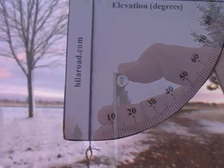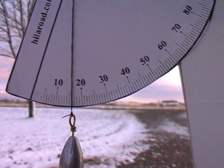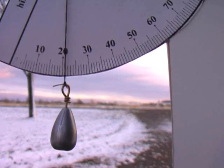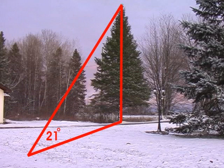The hanging weight maintains a true vertical reference line. The elevation to the top of this tree is 21 degrees. There are a number of interesting things you can do with data like this, including determining the height of the tree.